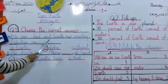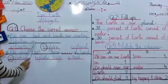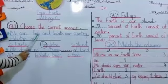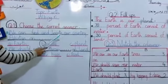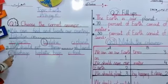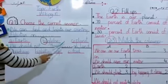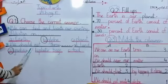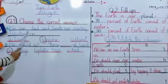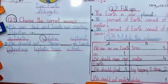We can find and locate our country Pakistan on dash. Option A is Earth, B is Globe, C is Planet. The right answer is Globe. Circle option B — it is the right answer.